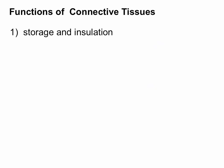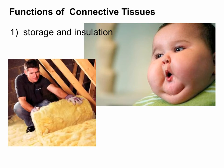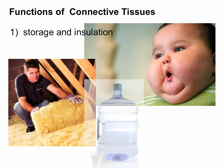Because there are so many different types found in so many different places, connective tissues have lots of different jobs depending on what kind they are, and some of them overlap. The first function is storage and insulation — fat stores energy, but it also insulates the body to help maintain heat. Some connective tissue also serves as a place for water to be stored.